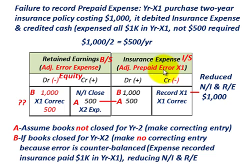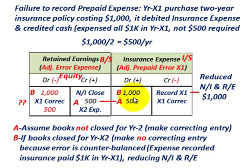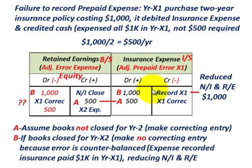For case A — assume the books are not closed for year X2 — you make this correcting entry: debit or increase insurance expense by $500, and credit or increase retained earnings by $500. The rationale is that recording the full $1,000 in X1 increased insurance expense, reduced net income, and since net income closes to retained earnings, retained earnings were reduced by $1,000 when only $500 should have been expensed in X1.